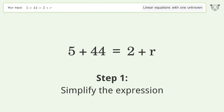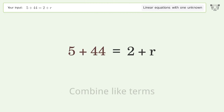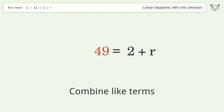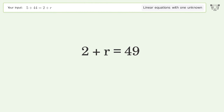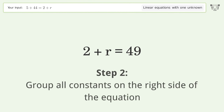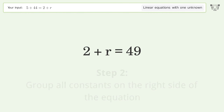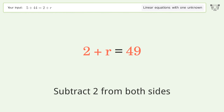Simplify the expression and combine like terms. Swap sides. Group all constants on the right side of the equation. Subtract 2 from both sides.